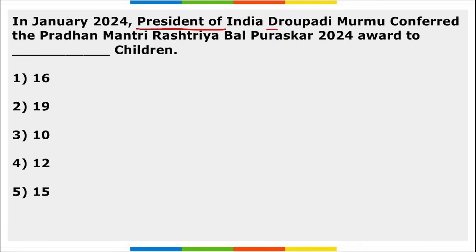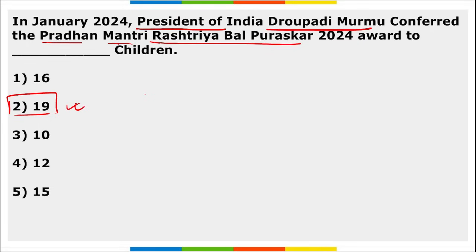President of India Droupadi Murmu conferred the Pradhan Mantri Rashtriya Bal Puraskar 2024 to a total of 19 children — 9 boys and 10 girls.